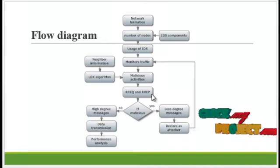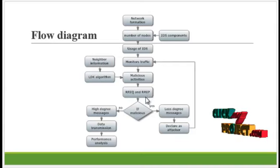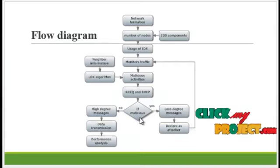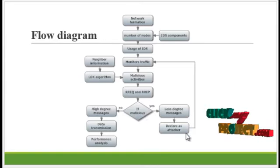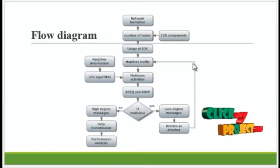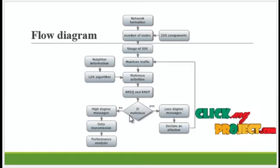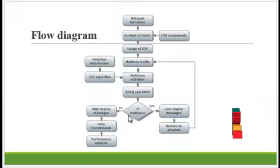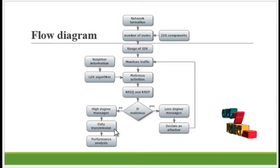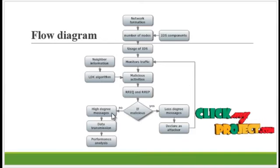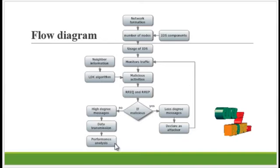It processes request and reply messages in the route. If a malicious node is present, then it generates restricting messages and provides data transmission with advertisement messages. This algorithm can declare the node as an attacker node and inform the route. It then monitors the traffic to choose another path. If it is a normal node that is not malicious, then it uses high-degree messages and provides data transmission with advertisement messages.